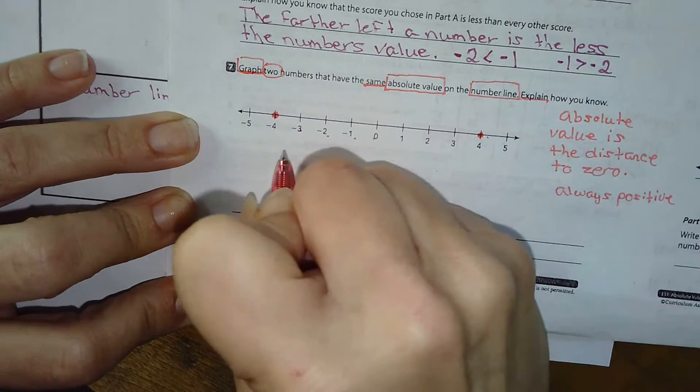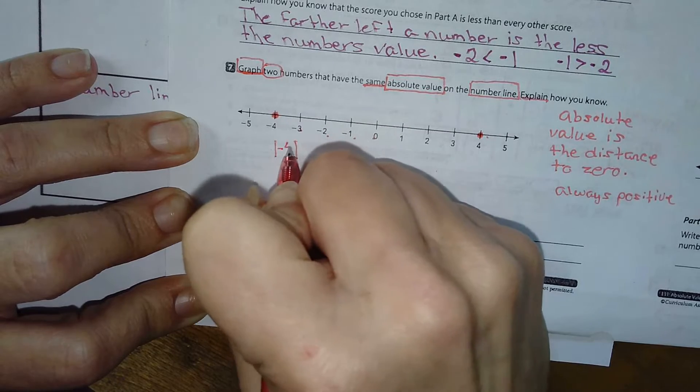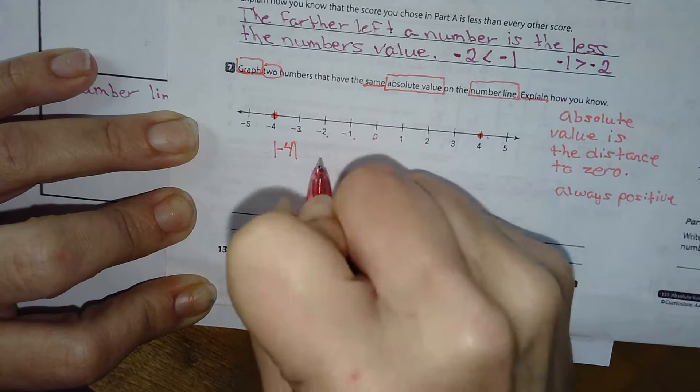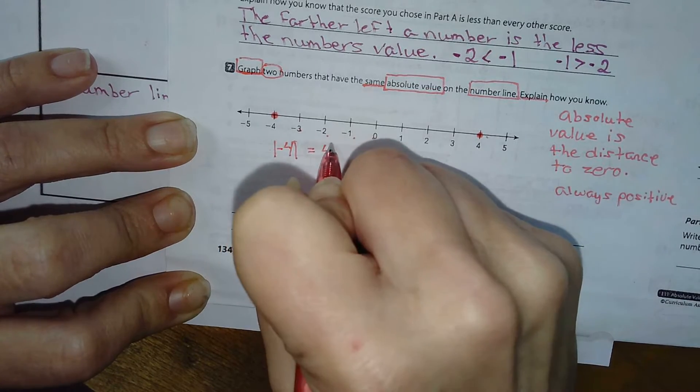1, 2, 3, 4. The absolute value of negative 4 is 4, okay?